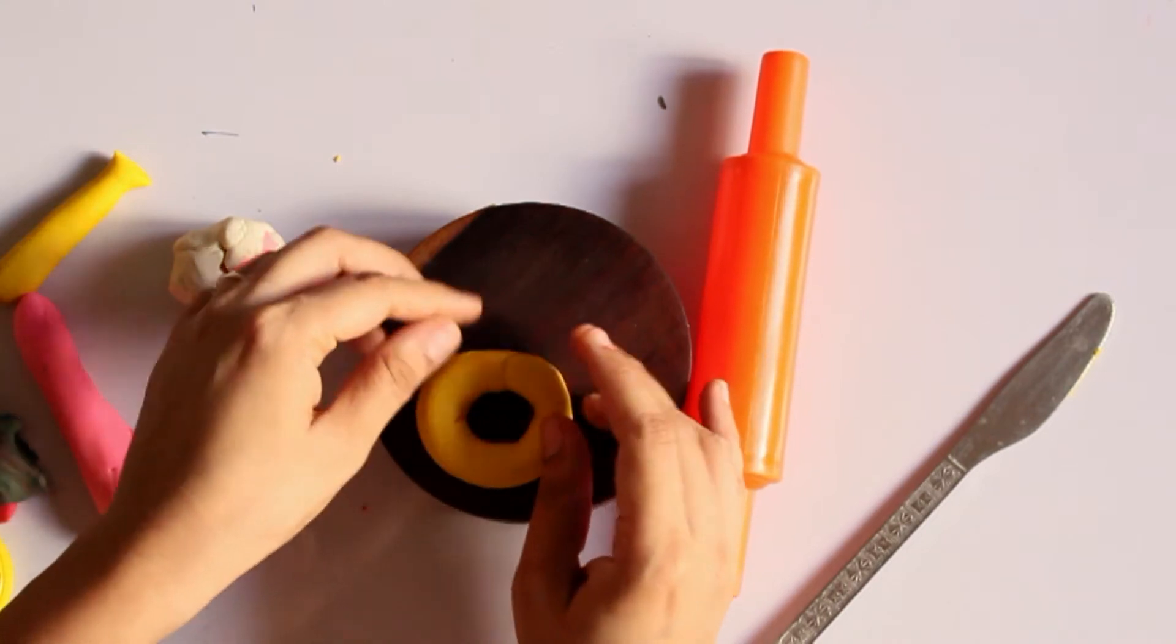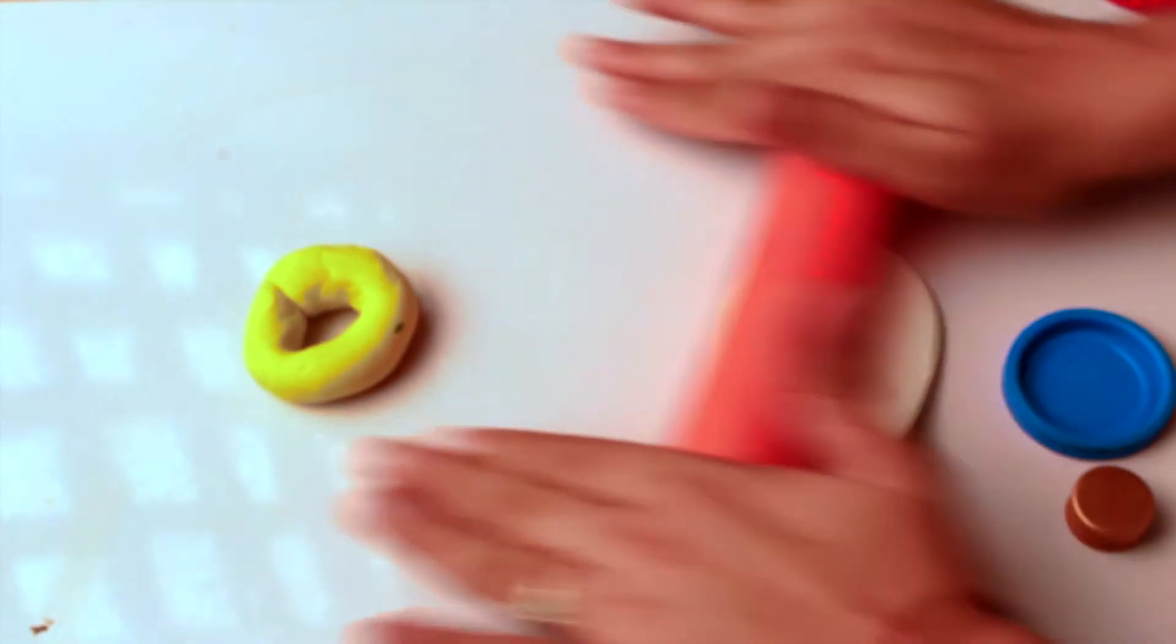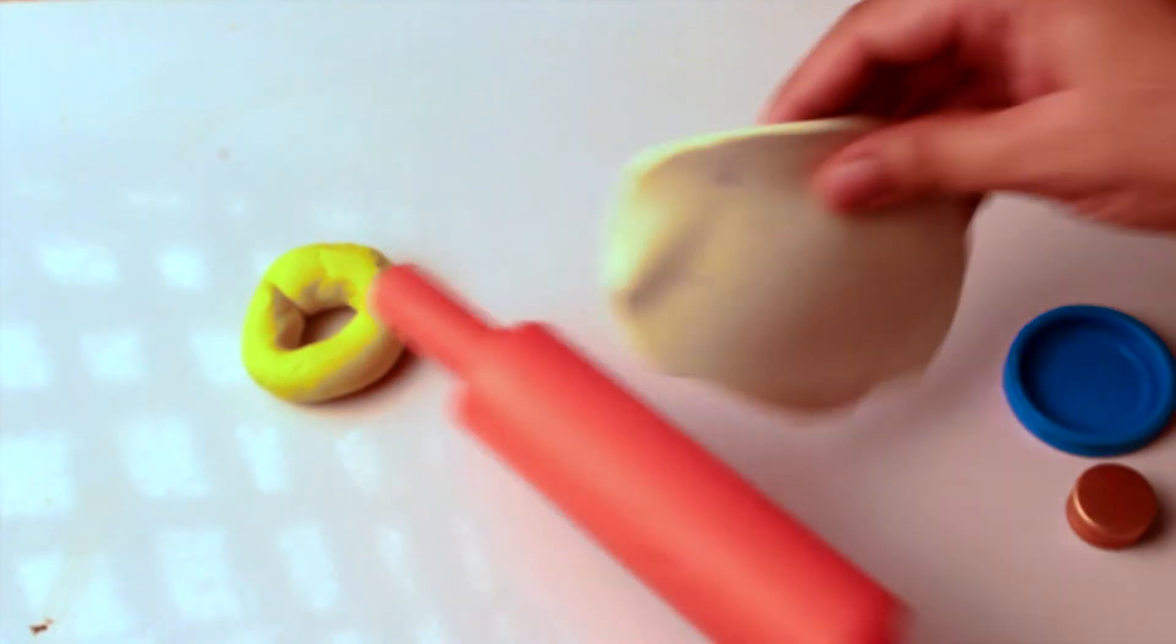So we're gonna make some icing now. For that, just roll out some white Play-Doh because we're gonna make a white creamy doughnut.